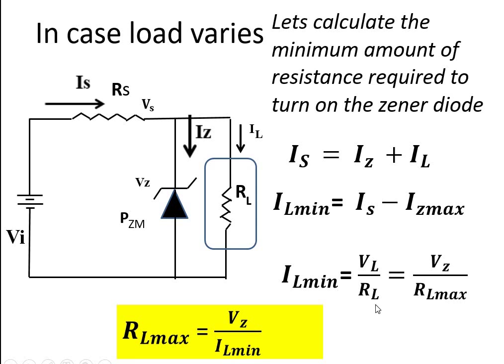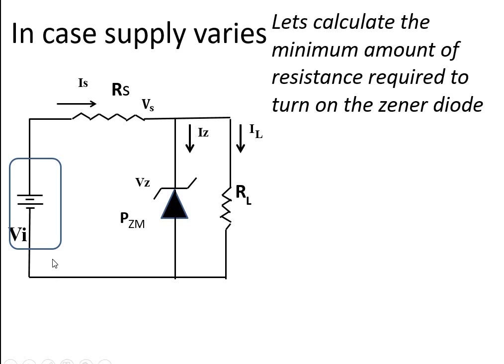This way we can calculate the RL maximum. So now we have got the range, RL minimum to RL maximum. Now let's imagine a situation where the load is fixed, but this supply voltage is susceptible to fluctuations.